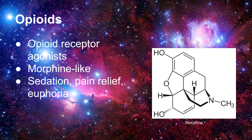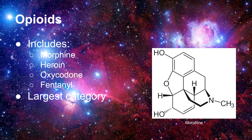Opioids is the core category of morphine-like drugs which act on opioid receptors as agonists, and can provide effects like sedation, pain relief, and euphoria. Among the drugs in this category are morphine, heroin, oxycodone, and fentanyl. Out of the three categories being discussed, the opioid category is the largest.